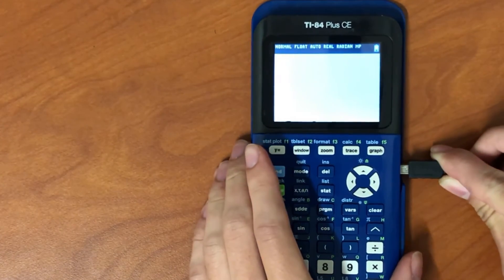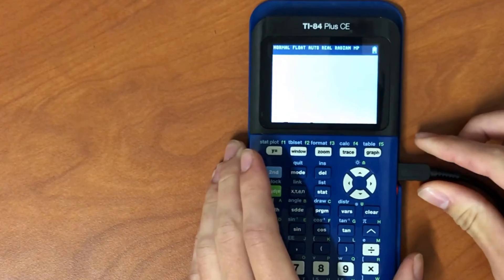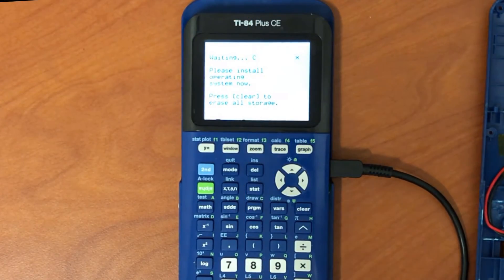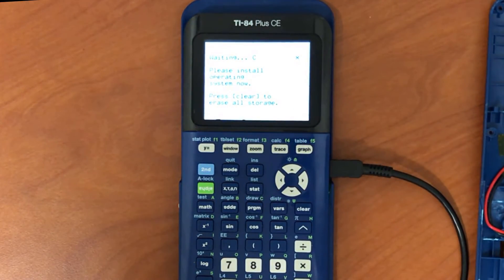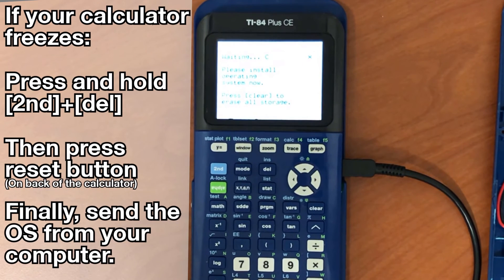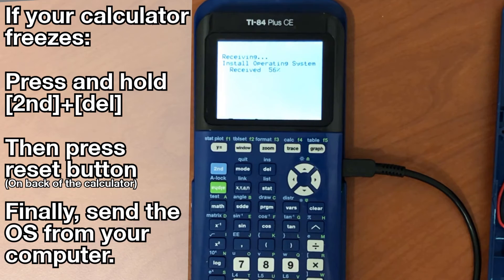Go back to the home screen and drag and drop the OS file you downloaded onto your calculator's name. Click send and wait for the calculator to update. This will take a minute. If your calculator freezes during update, press and hold second and del, then press the reset button on the back of the calculator. Once you get to the recovery screen, you can try to send the OS again. You may need to press clear to erase all the storage for it to work.